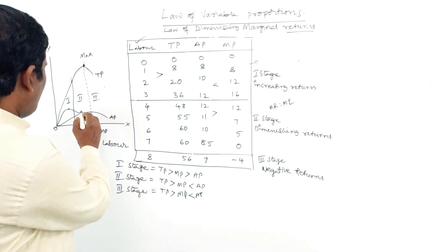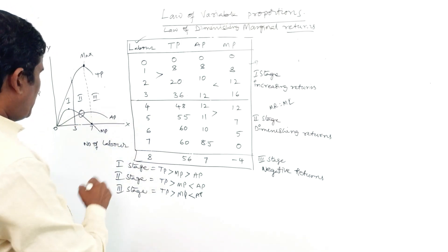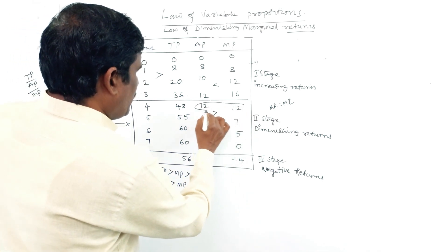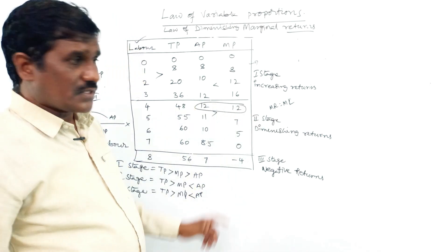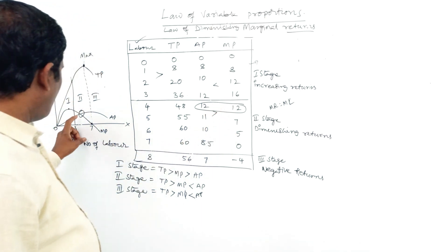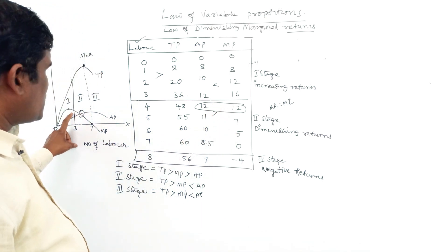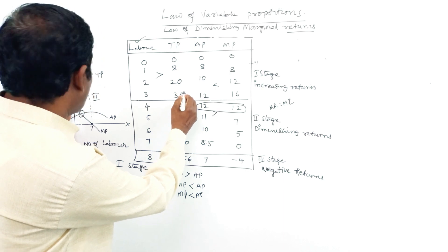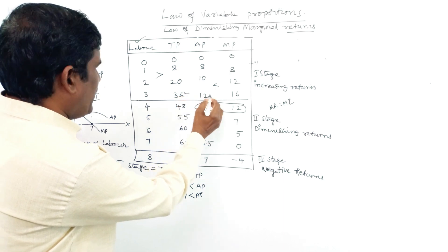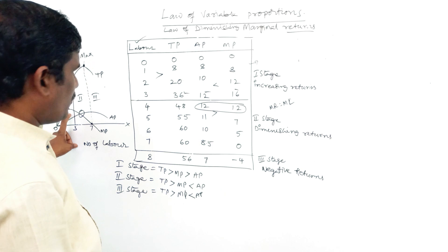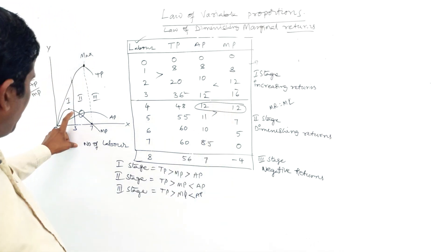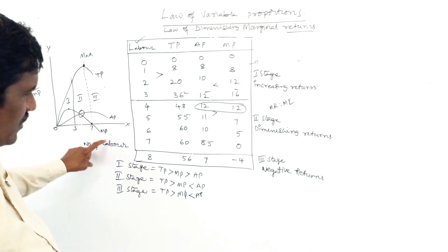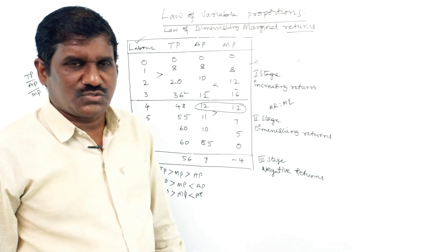At the boundary between stages, AP and MP are equal to each other — AP equals MP. In the third stage, MP goes to negative values. Looking at the table: TP values are 36, 12, 16, and MP becomes equal to negative values in the third stage.